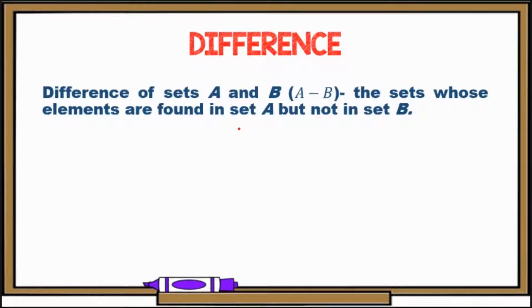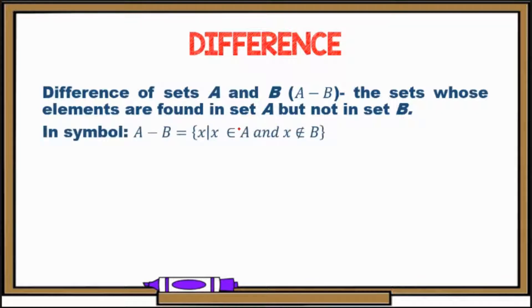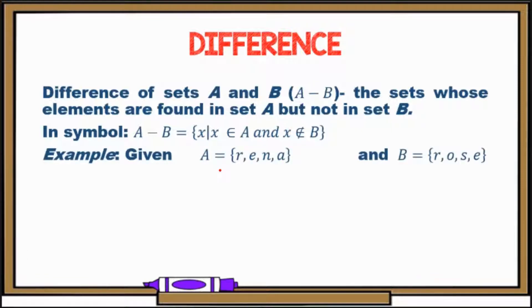Now let's go to difference. For the difference of sets A and B, this is denoted by a minus sign. The difference is the set whose elements are found in set A but not in set B. In symbol, A minus B is equal to the set of all X such that X is an element of A but not an element of B.